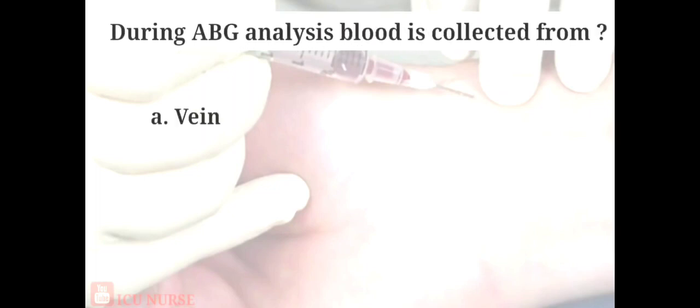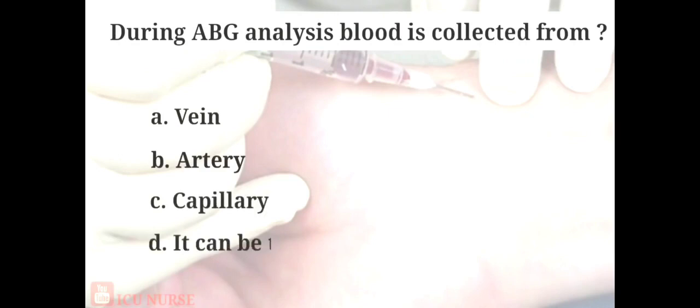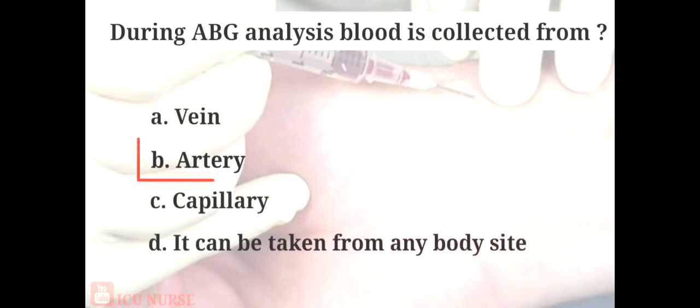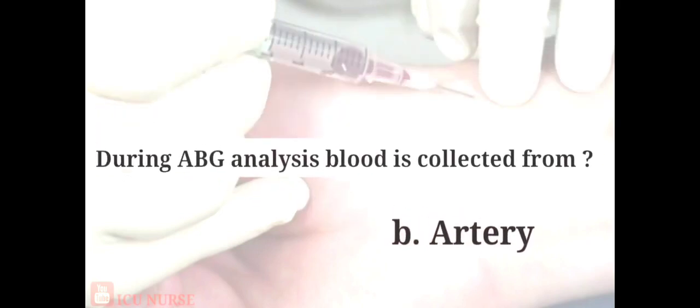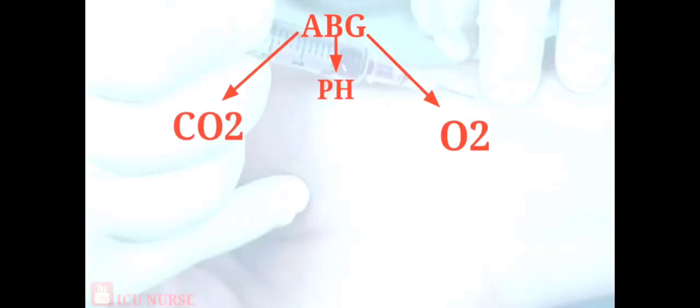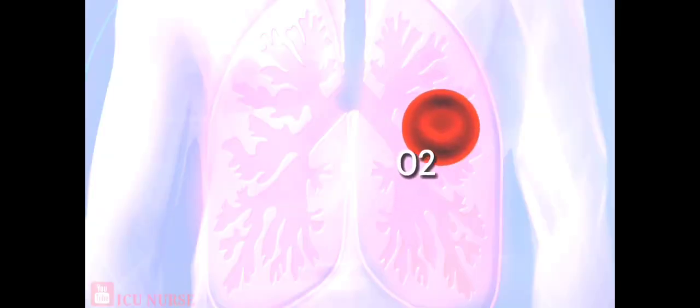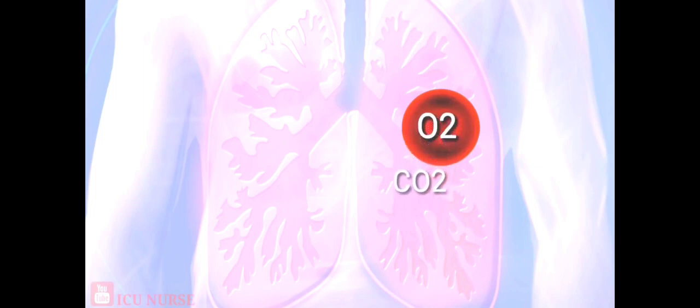During ABG analysis, blood is collected from: A. Vein, B. Artery, C. Capillary, D. It can be taken from any body site. The answer is B. Artery. An ABG is a blood test that measures the acidity or pH and the levels of oxygen and carbon dioxide from an artery. The test checks the function of the patient's lungs and how well they move oxygen in and remove carbon dioxide out of the body.